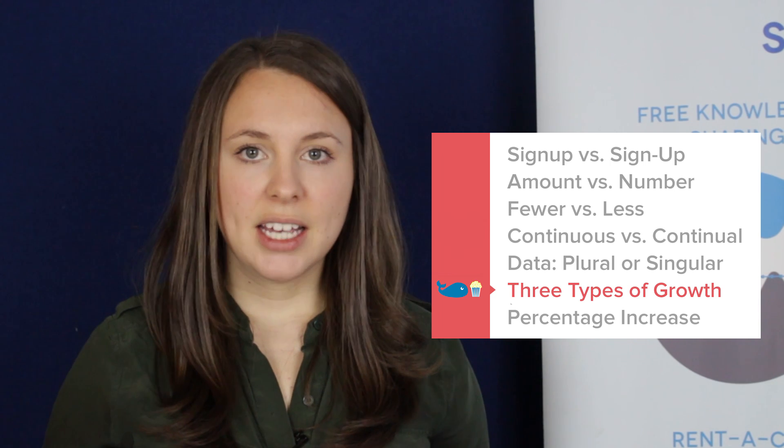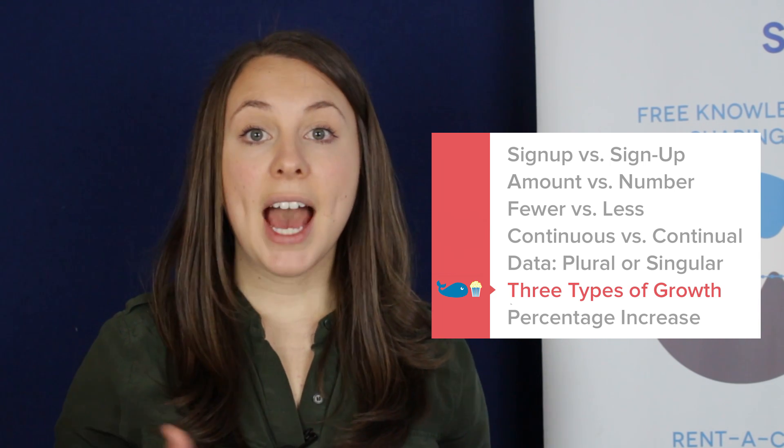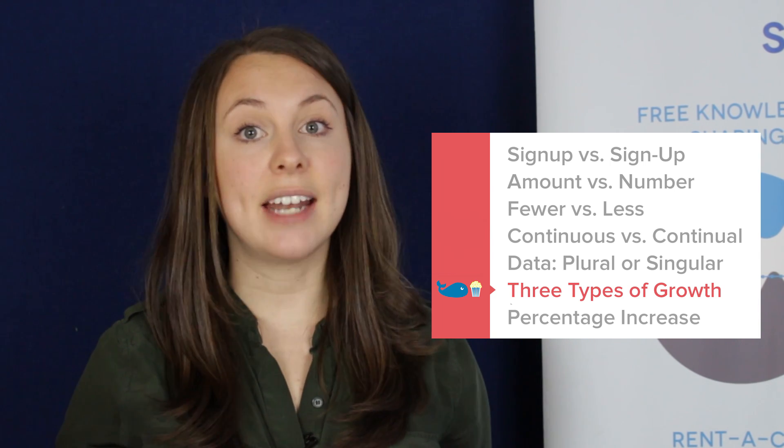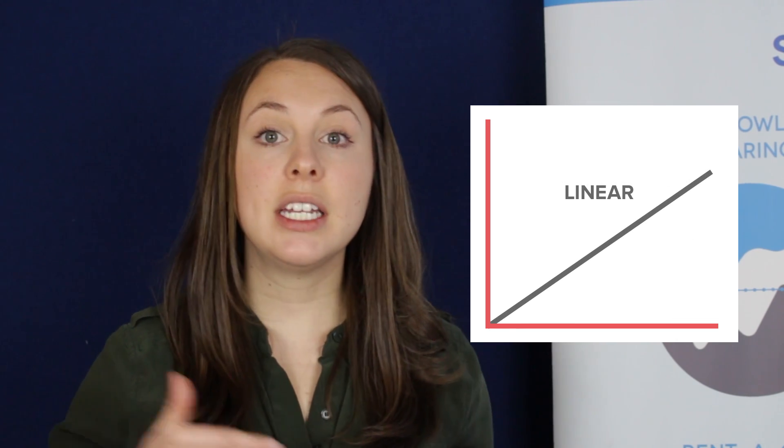The next common mistake is mixing up the different kinds of growth: exponential, linear, and logarithmic. Often we hear people say they want exponential growth — it sounds awesome. But what they really want is slow and steady growth over time, which might be more like linear growth, or even logarithmic, which starts really fast and tapers off. When a video goes viral, its view count might be exponential, but for something like organic traffic or email list growth, slow and steady linear growth is more likely.